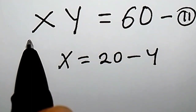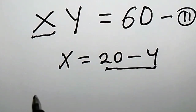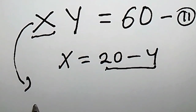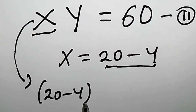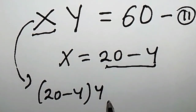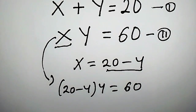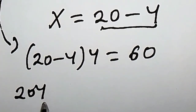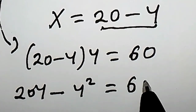The next step is to replace x with 20 minus y. So from here, we are going to have (20 minus y) times y equal to 60. Expanding: 20 times y is 20y, minus y times y is y squared, equal to 60.